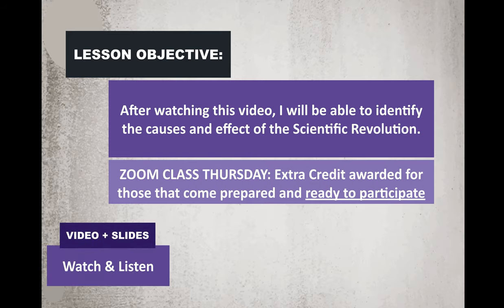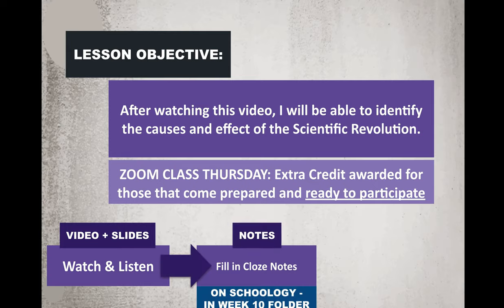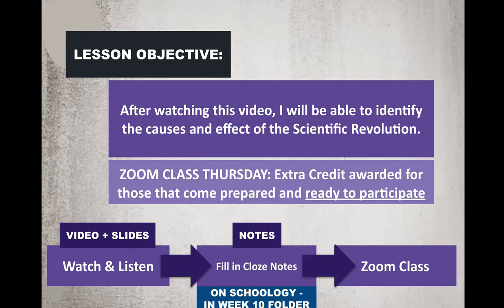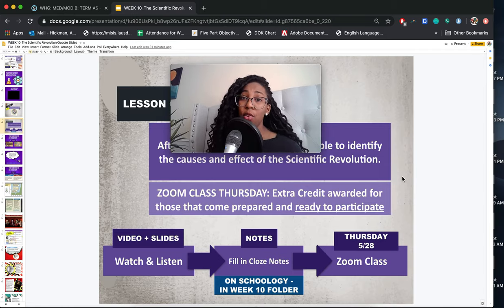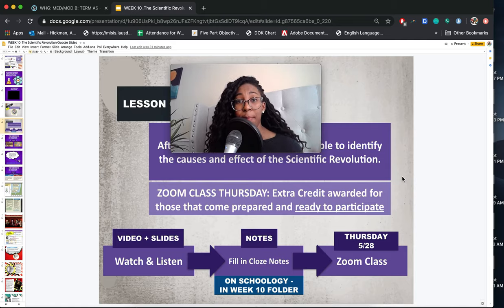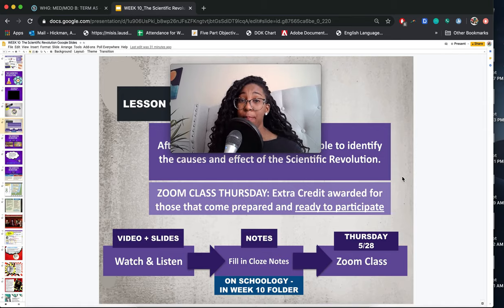Your week will go like this: today you're watching and listening to the video, and while you do that you will be doing closed notes. Then the last thing you'll do this week is our Zoom class on Thursday, May 28th. I've noticed some people are coming to class but not really participating when I call on them. Extra credit is only for those I know are there and paying attention. Even if you're not showing your face, responding in the chat box shows you're paying attention. If you want that extra credit, please make sure you are fully participating on Zoom.